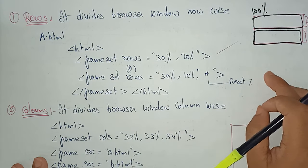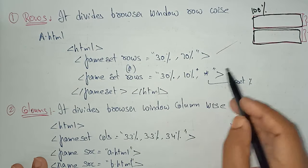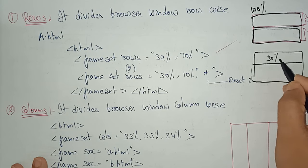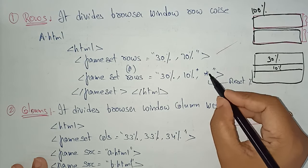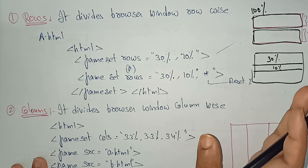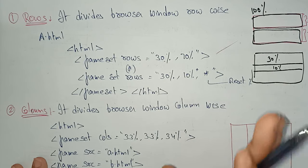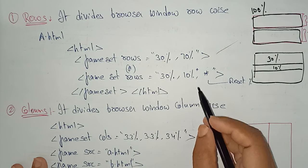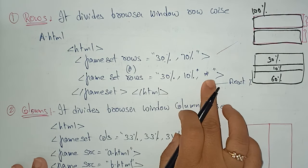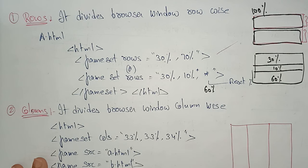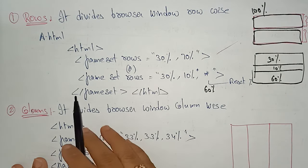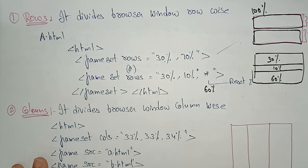You can also write 30, 10, * — meaning one frame is 30%, another is 10%, and the star means the rest of the percentage. Since 30 plus 10 is 40, the star equals 60%. So three frames are created. You can divide frames to any number of sizes, but the target is that they should total 100%. Then close the frameset and close the HTML.